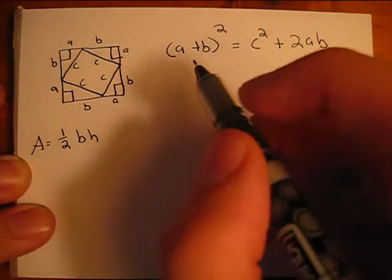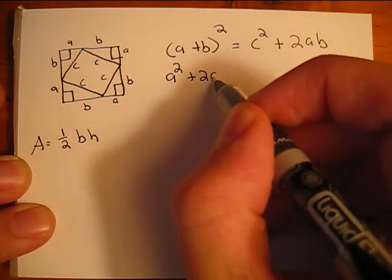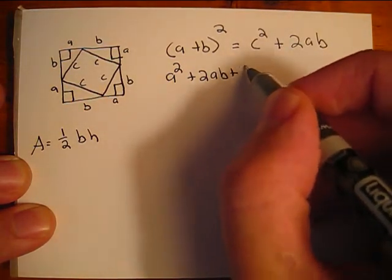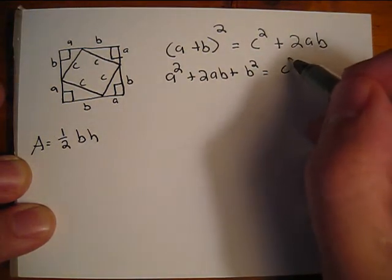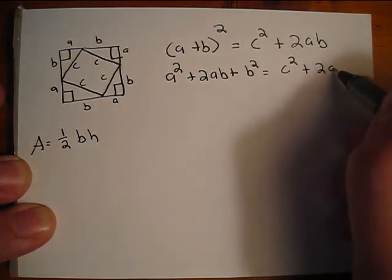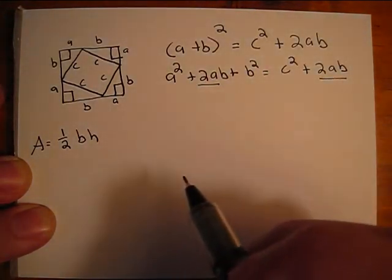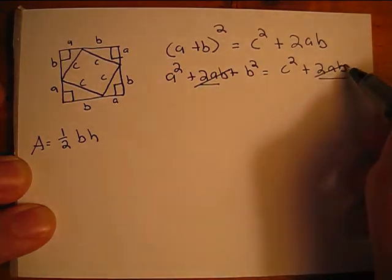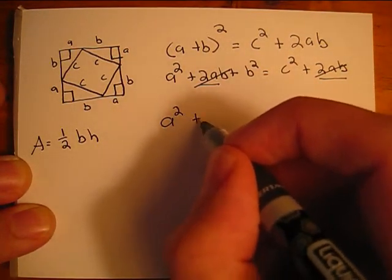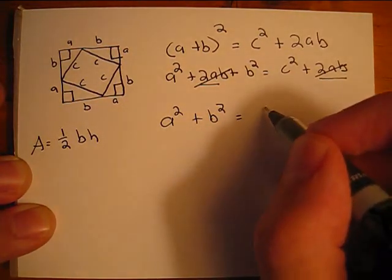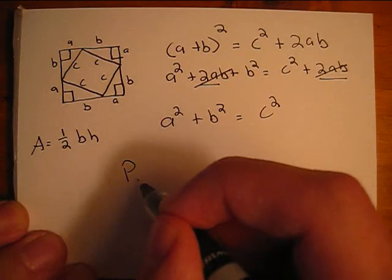So let's simplify this equation. We have a squared plus 2ab plus b squared on the left side, while the right side is c squared plus 2ab. We notice that 2ab is on both sides, so we can cross those off — they cancel each other — and we are left with a squared plus b squared equals c squared, which is the Pythagorean Theorem.